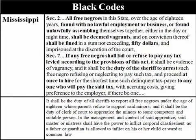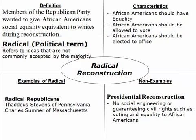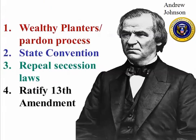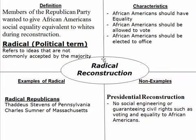A lot of these laws were going to do away with civil liberties and civil rights for African Americans. These Radical Republicans opposed Johnson's Reconstruction plan, saying it was too lenient. The definition of 'radical,' in political terms, refers to ideas not commonly accepted by the majority at that particular time. Radical Republicans were members of the Republican Party who wanted to give African Americans social equality equivalent to whites during Reconstruction — that was unheard of and very radical for its time.